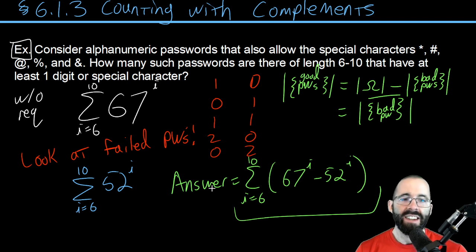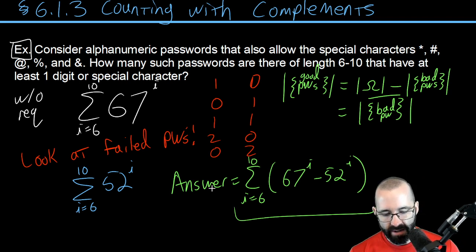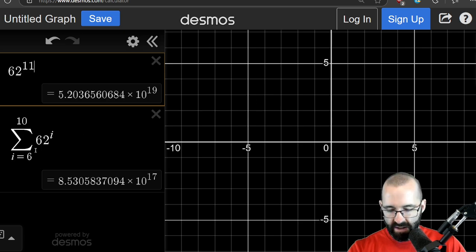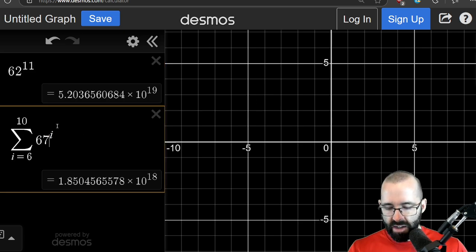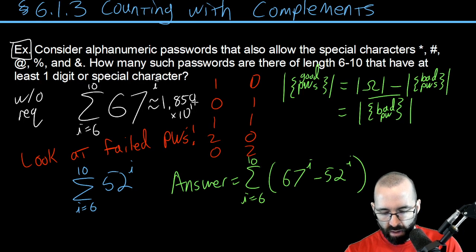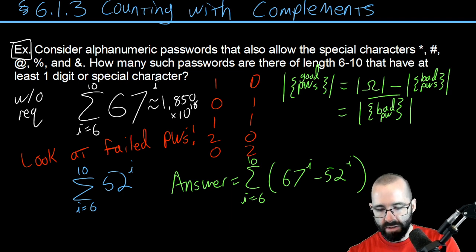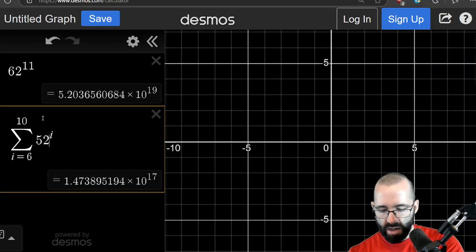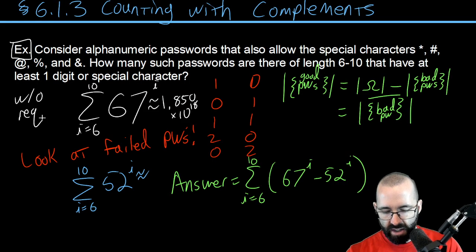And as an added bonus, it hopefully helps teach some shorthand. So we're going to get a very big number. Let's find out what all these things are. Without the requirement, there's 67 to the i'th, i goes from 6 to 10. Very big number—about 1.850 times 10 to the 18th. The bad passwords, that's going to be 52 to the i'th. That's 1.474 times 10 to the 17th.